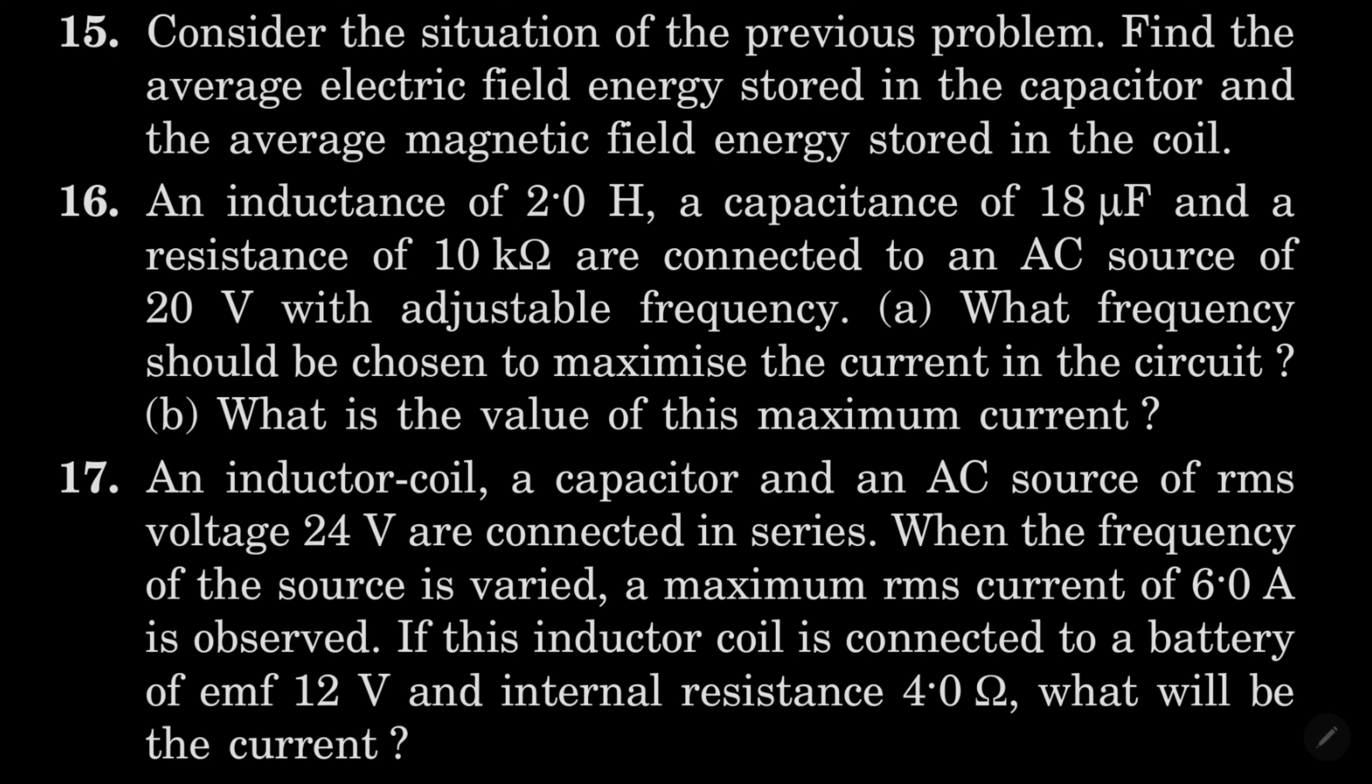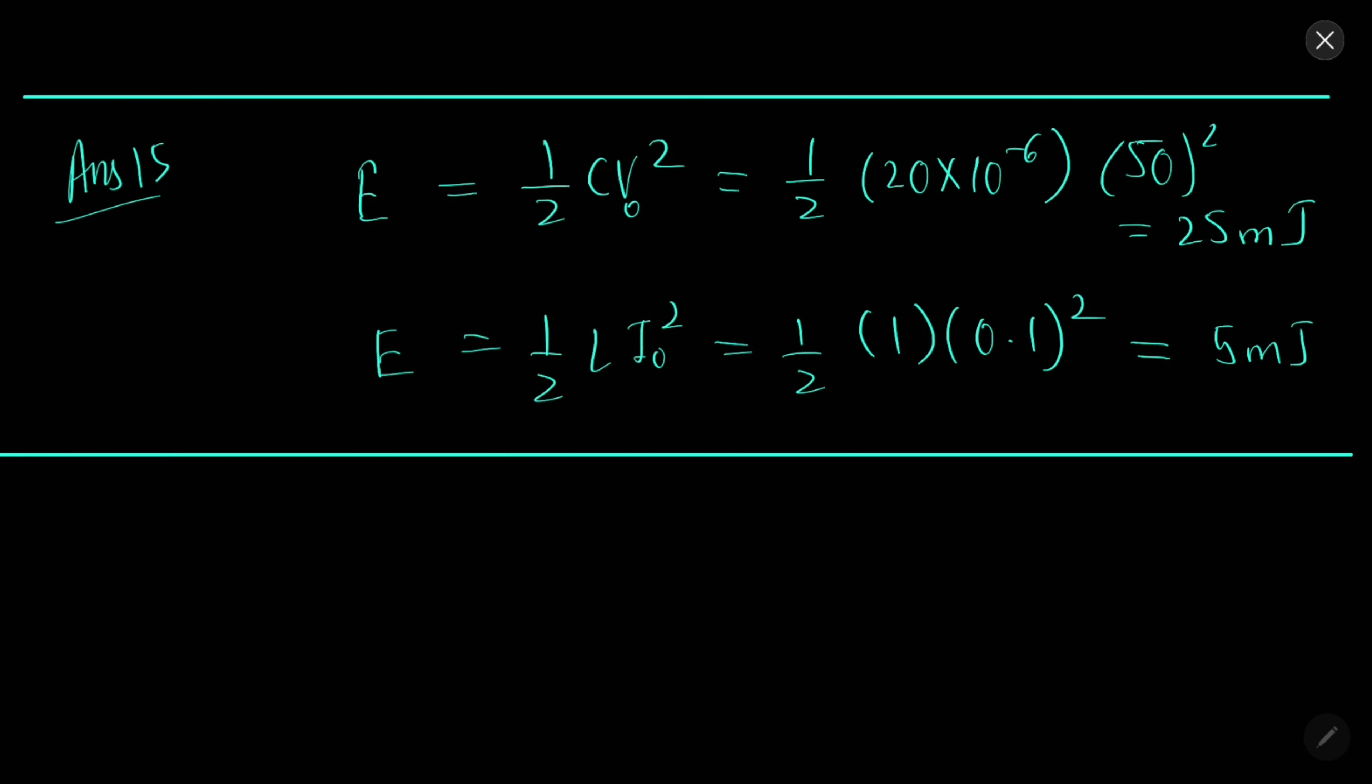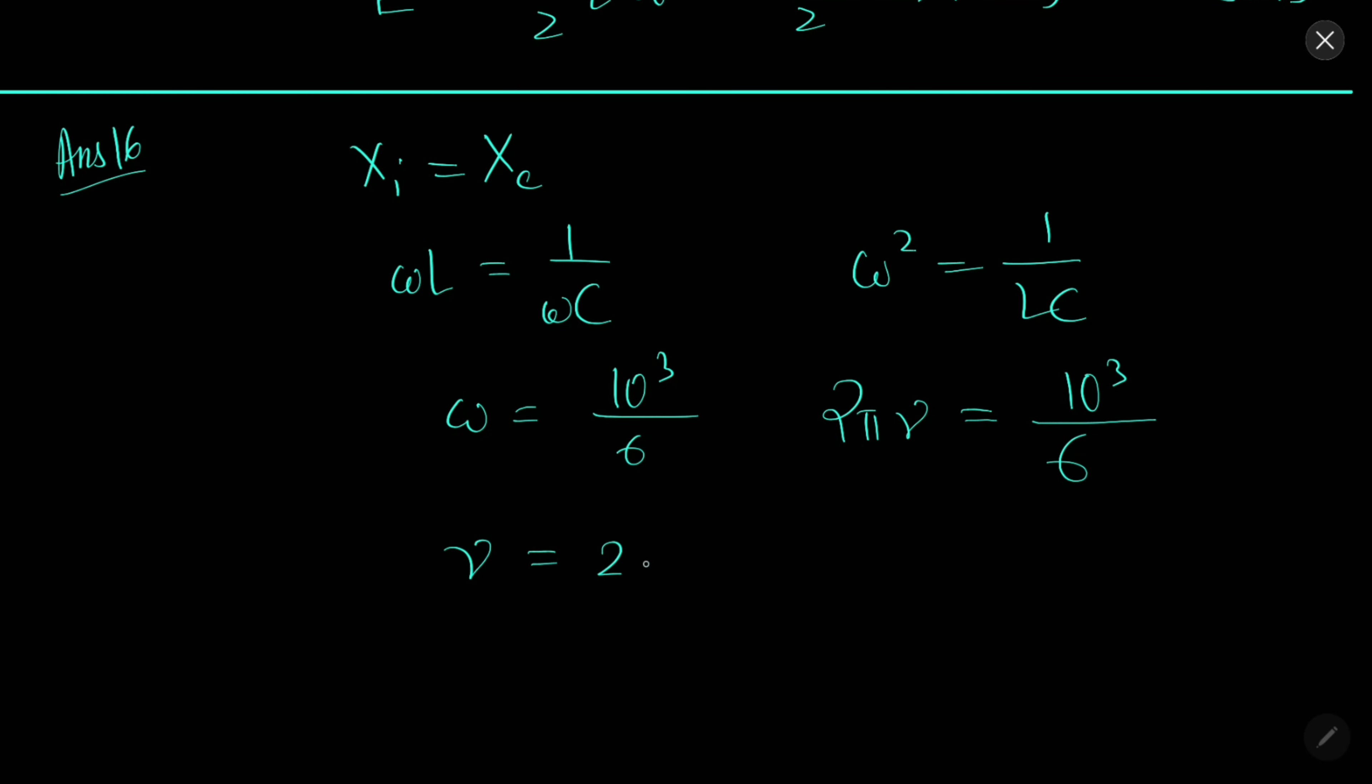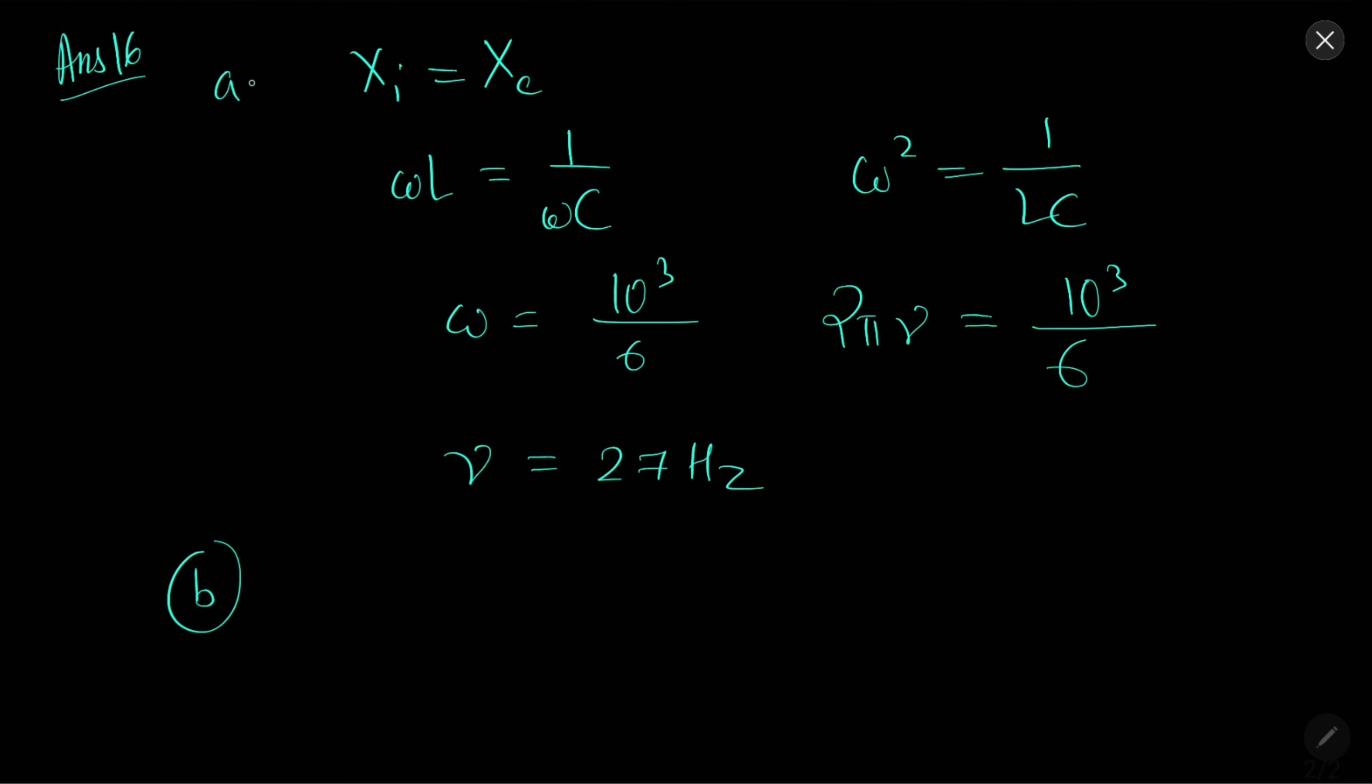In 16, we need to find the frequency to maximize current and value of maximum current. Solution 16: For maximum current, capacitive impedance and inductive impedance should be equal. So omega L equal to 1 by omega C. Omega square equal to 1 by LC. Omega will be 10 to the power 3 by 6. 2 pi nu will be 10 to the power 3 by 6, so frequency will be around 27 Hz. Part B: maximum current E by R, 20 by 10 into 10 to the power 3, equals 2 mA. When maximum current is there, Z is equal to R.